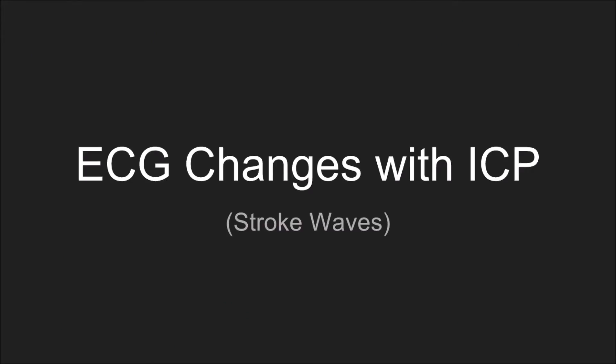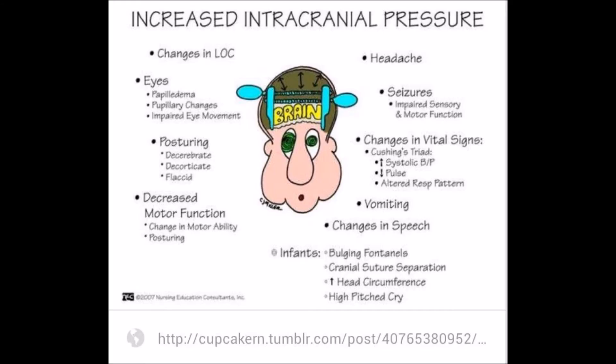Let's talk about some of the changes we see with elevated intracranial pressure and how that may manifest on the ECG. First, the physical findings of increased intracranial pressure: we can see changes in level of consciousness as well as the eyes. We see people that posture — so it can be decerebrate or decorticate — or they can be completely flaccid. Decreased motor function is also key to noticing it, especially in the early stages, as well as headaches and seizures.